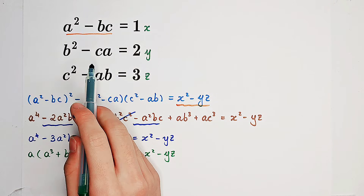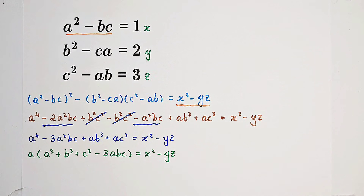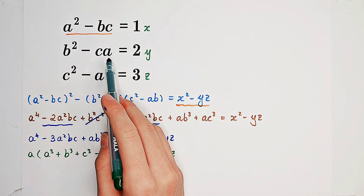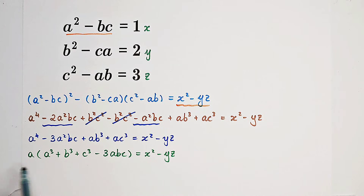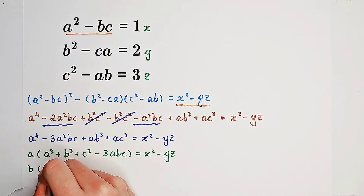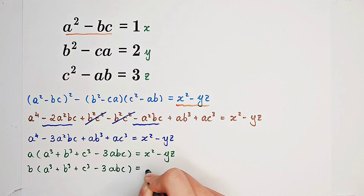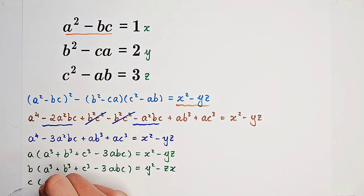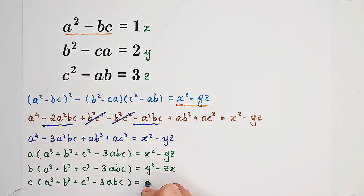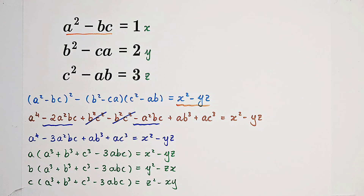The first equation squared minus the second equation times the third equation gives us this result. Similarly, we get b times (a cubed plus b cubed plus c cubed minus 3abc) equals y squared minus zx, and c times (a cubed plus b cubed plus c cubed minus 3abc) equals z squared minus xy. We now have a new system of equations for a, b, and c with parameters x, y, z being positive real numbers.